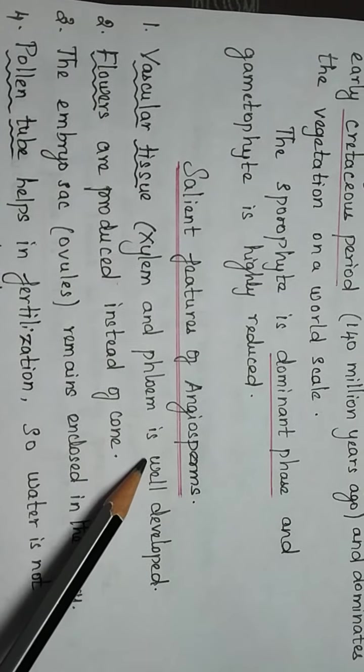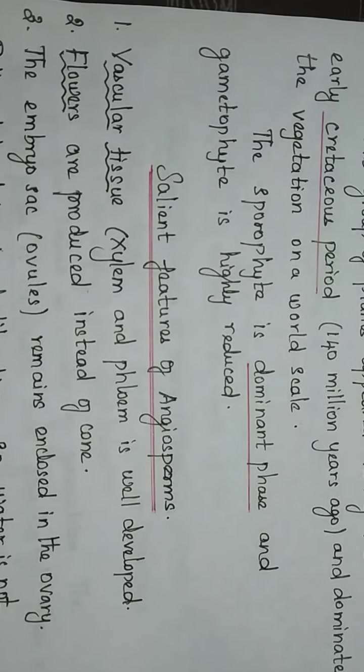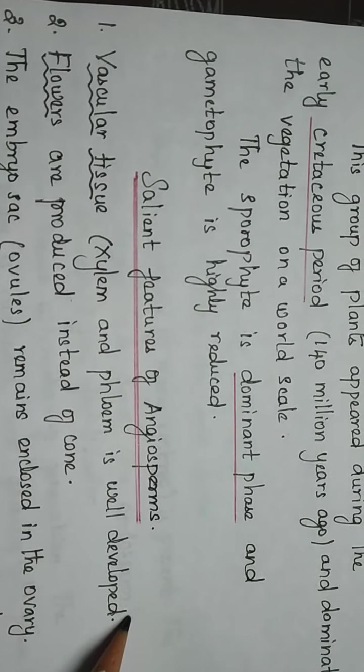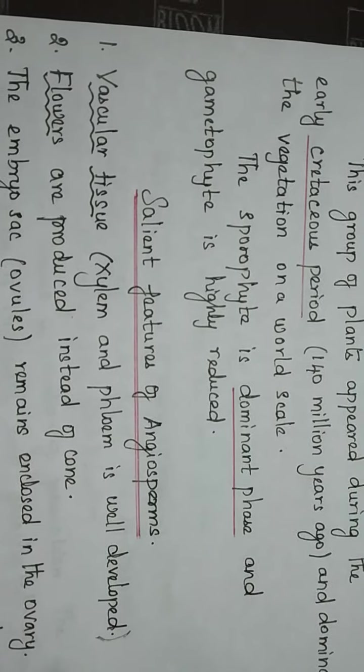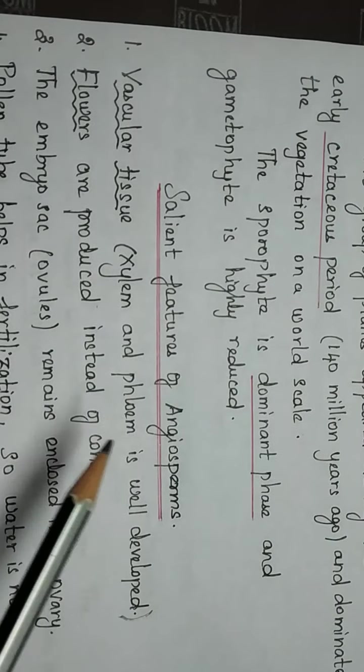The vascular tissue — that is, xylem and phloem — is well developed. Flowers are produced in angiosperm plants, instead of cones.